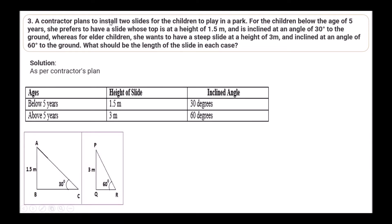Question 3: A contractor plans to install two slides in a park. For children below age 5, the slide top is at a height of 1.5 meters inclined at 30 degrees to the ground. For elder children, the slide top is at 3 meters inclined at 60 degrees to the ground. Find the length of the slide in each case. The diagram is drawn as per the given instructions.